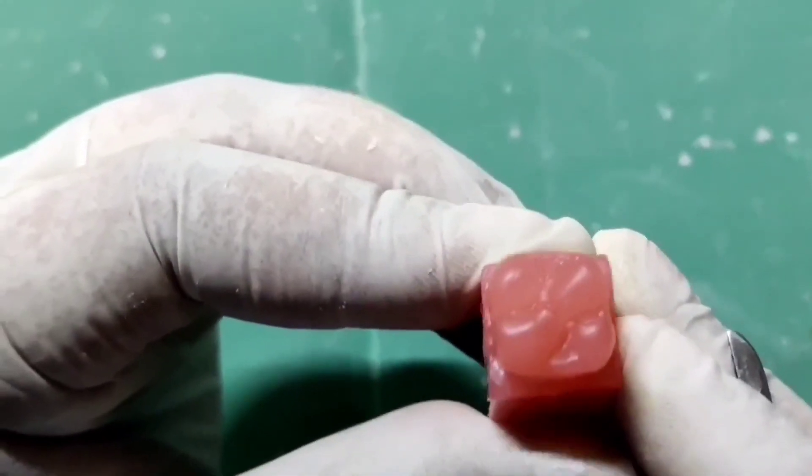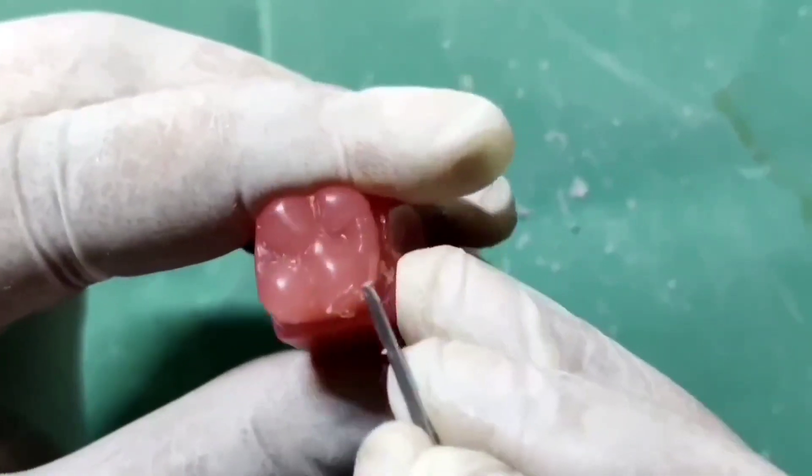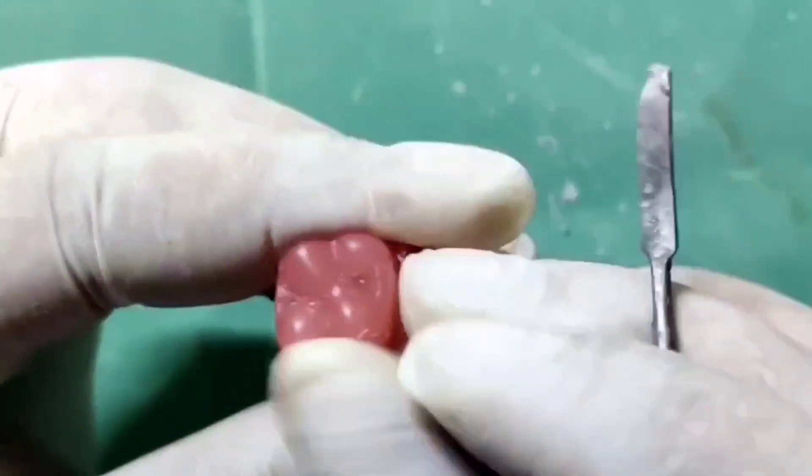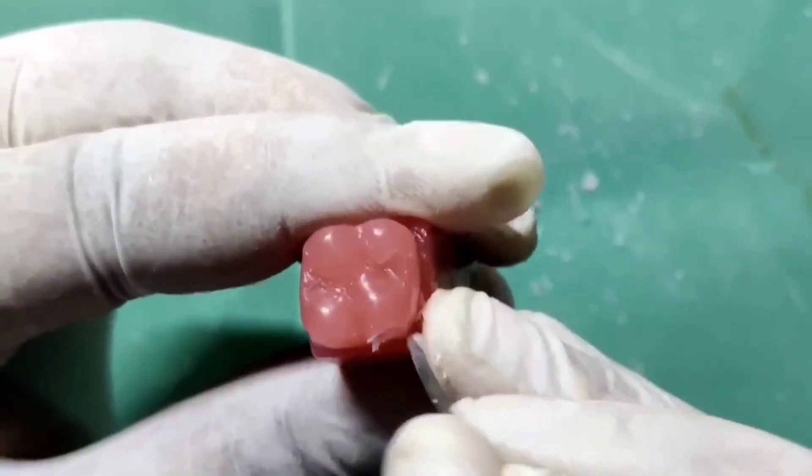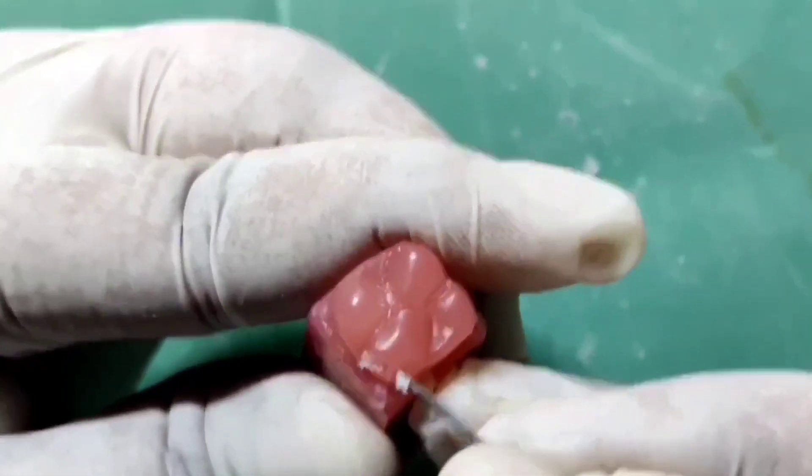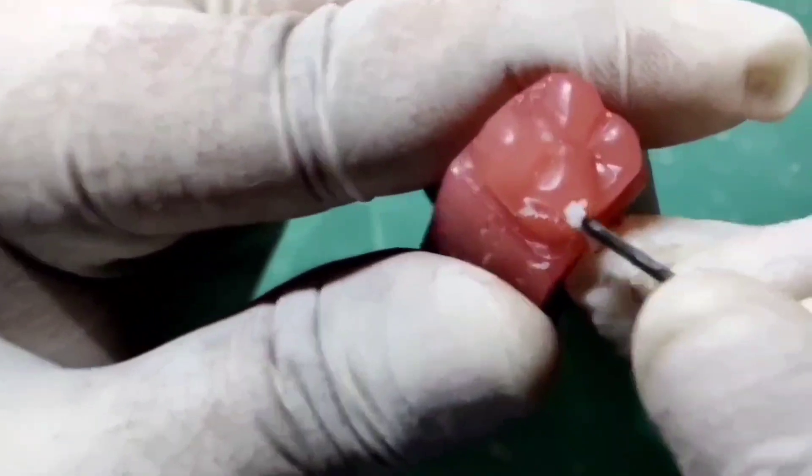We will start carving the cusp of Carabelli which is present on the lingual side of the surface of the mesiolingual cusp. Cusp tip is approximately 2mm cervical to the cusp tip of the mesiolingual cusp.